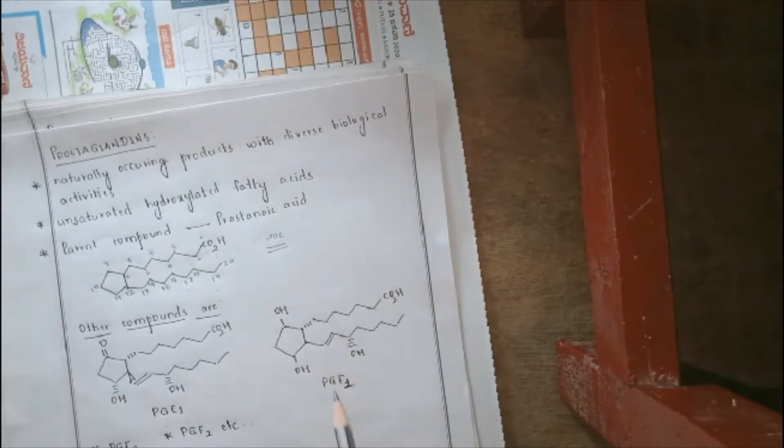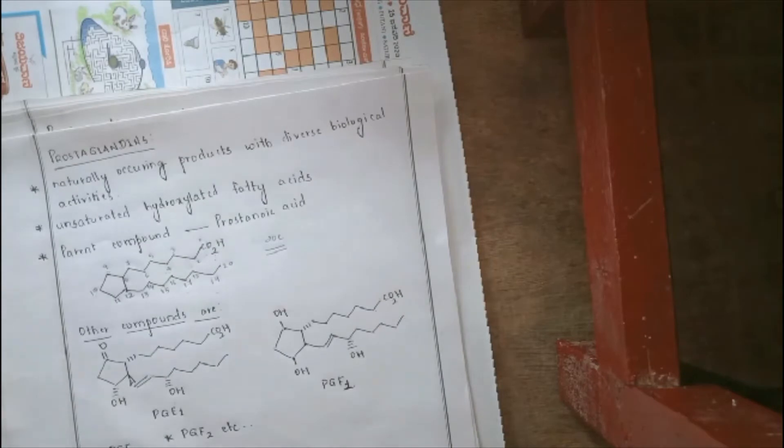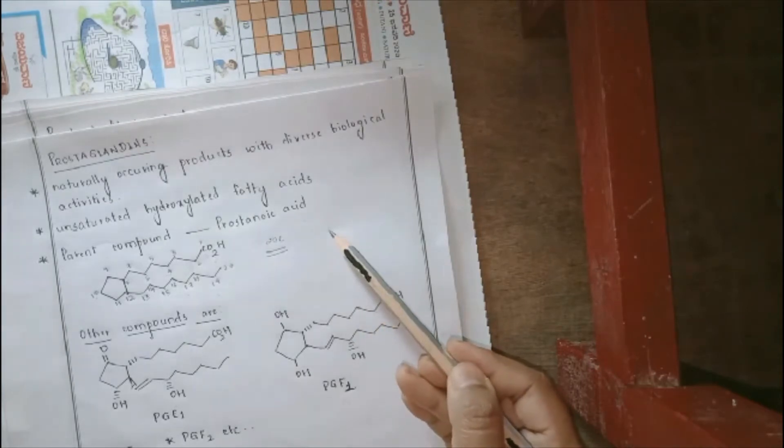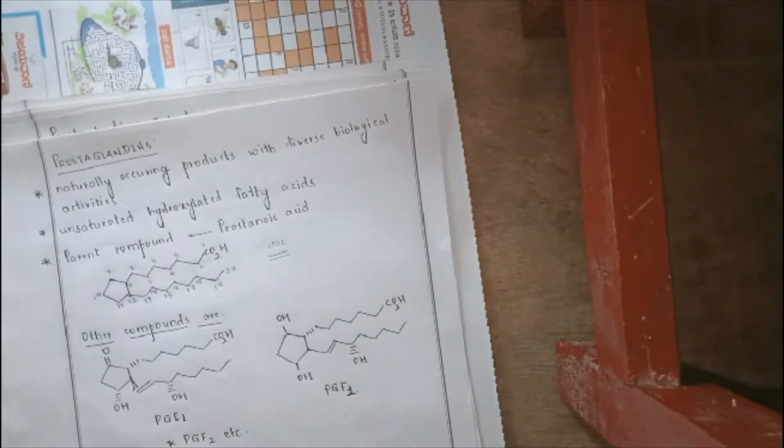Also, we can see that there are other types of prostaglandins, which can be PGE2, PGF2. So, how are these structures classified would be dealt under classification and nomenclature. So, presently, we can see that all the prostanoic acid series in which there would be some other extra functional groups would be a part of prostaglandin systems in which they come as PGE1, PGF1, PGE2, PGF2, etc.